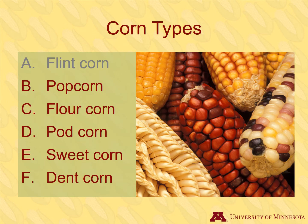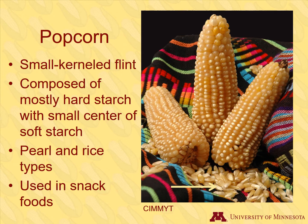Everyone is probably familiar with popcorn, and maybe there's some in your cupboard at home right now. Popcorn is a type of flint corn. It is composed of mostly hard starch with a small center of soft starch. The kernels in the ears are smaller than other types of corn, and the plants themselves are smaller too. There are two main types: pearl, which has a rounded kernel shape, and rice, where the kernels are pointed. Popcorn can be white, yellow, red, blue, or black. Popcorn is only used for food. It has no industrial or feed applications, and is only a small part of the corn grown.